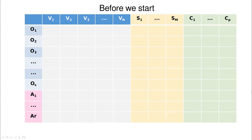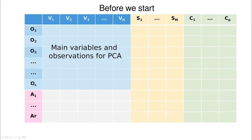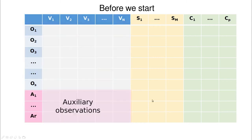Before we start, a piece of advice. Imagine that this is our dataset: columns are variables and rows are observations as usual. We're going to use typically one part of the table to perform the PCA analysis, and remove some additional information for exploring further. So we're going to leave some observations apart, and we'll call those auxiliary observations.